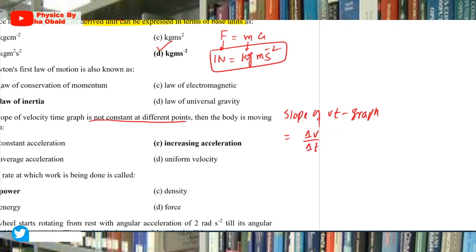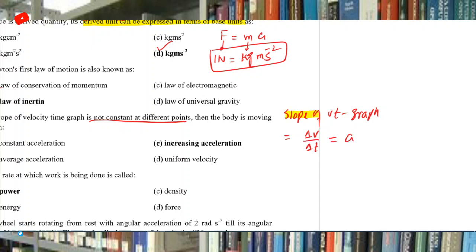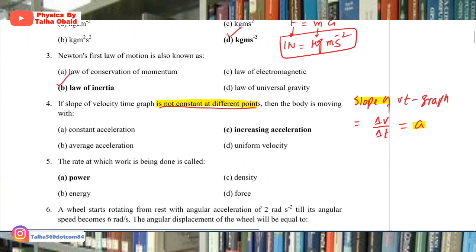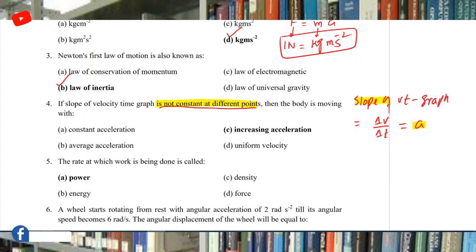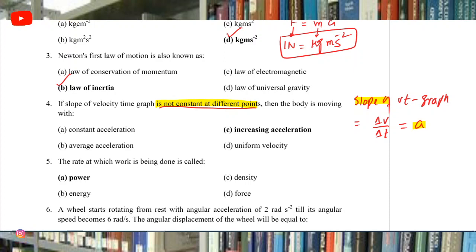The slope of the velocity-time graph gives acceleration. Here it has told us that slope is not constant — it means that acceleration is not constant. There is no option for variable acceleration, or non-uniform acceleration, or increasing acceleration, or decreasing acceleration directly stated.